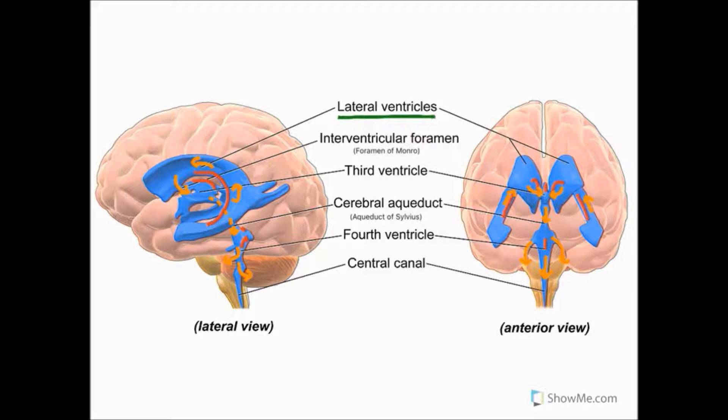Each lateral ventricle resembles a C-shaped structure that begins at an inferior horn in the temporal lobe and travels through the parietal and frontal lobes, where it ultimately terminates at the interventricular foramen, also known as the foramen of Monroe.